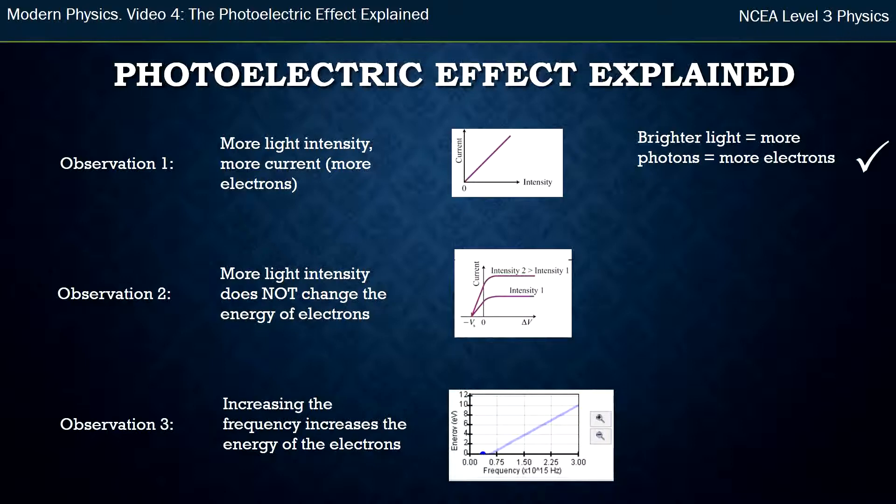The second one is that the light intensity didn't change the energy of the electrons. So when we have brighter light, we have more photons. However, the energy of those photons don't change because the energy of each photon is given by the frequency of it, the color of it. So when we have brighter light, sure, we're going to have more electrons coming off, but the energy that they get is not going to be any more, which is what we see in our experiment. So that also explains the second observation.